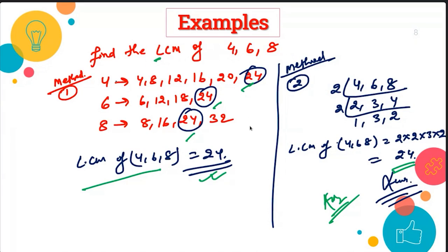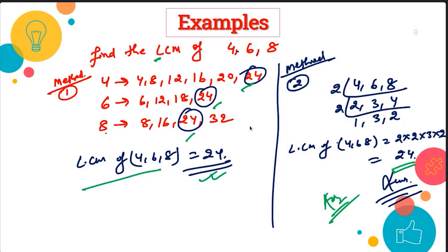The first method is finding the multiples of all these numbers — four, six, and eight. Multiples of four: four, eight, 12, 16, 20, 24. Multiples of six: six, 12, 18, 24. Multiples of eight: eight, 16, 24. We can go up to 40, 48 as well, but we stop here.